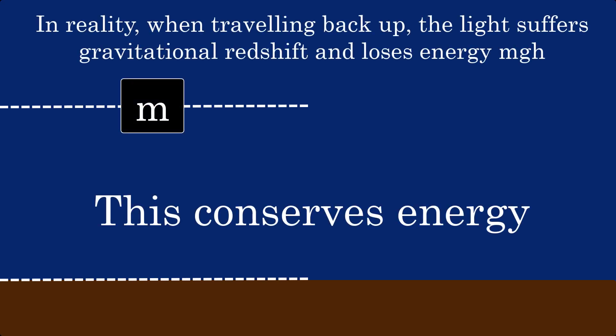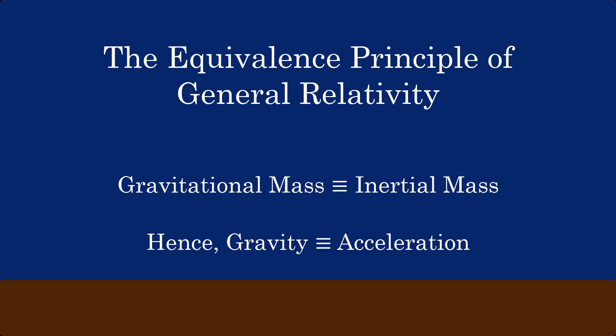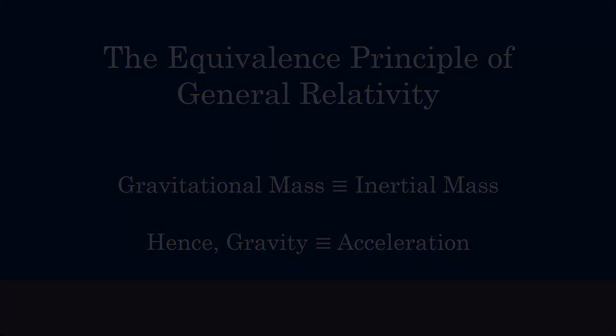Therefore, instead, the light travelling upwards must lose energy in the form of gravitational redshift as it attempts to escape Earth's gravitational field. General relativity relies on the equivalence principle, which states that the gravitational and inertial mass of an object are equal. Therefore, for this to be true, gravitational redshift must occur otherwise energy is not conserved in this thought experiment, which would mean GR is wrong in its assumption of the equivalence principle.